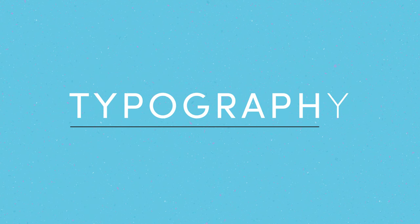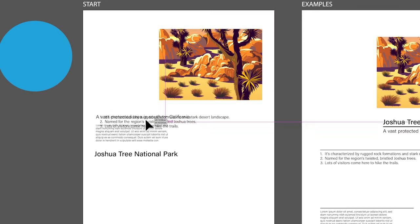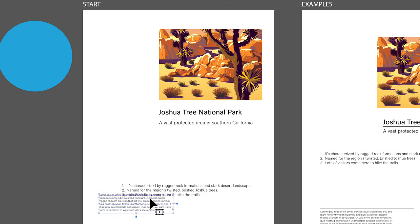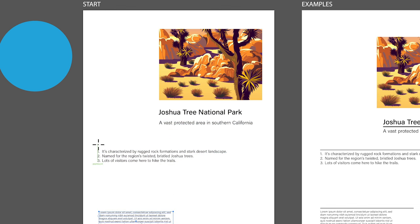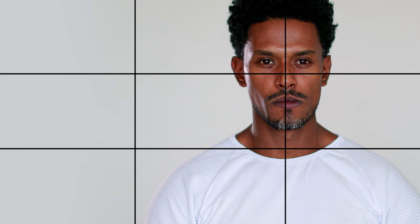First, do the exercises that we've gone through together 10 times. Each lesson includes an exercise file to help you understand the content with a practical application. The key to success is scale and proportion. We'll examine the rule of thirds to make almost any image and composition more dynamic.